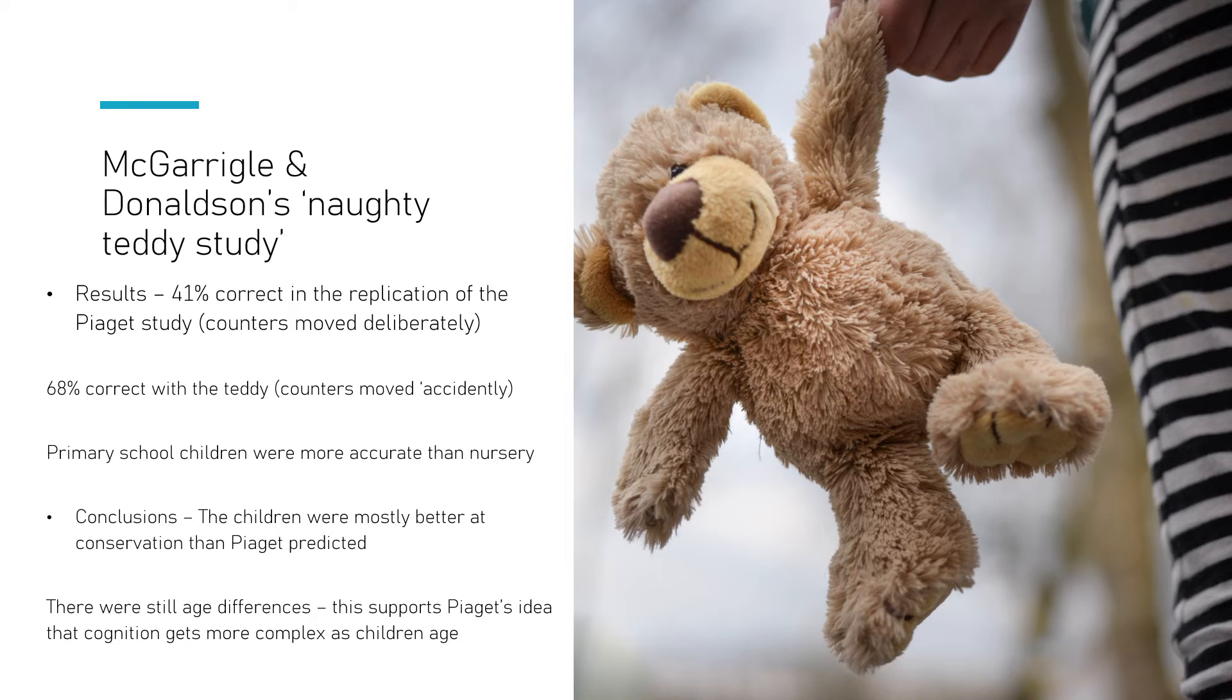What was interesting, what actually supported Piaget's theory, is that the primary school children were more accurate than the nursery school children, so the older they were the better they were at conservation. So really looking at the conclusions then, what does this suggest?